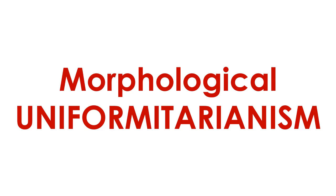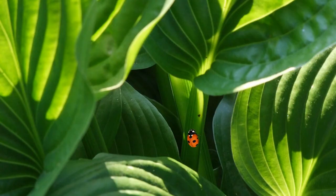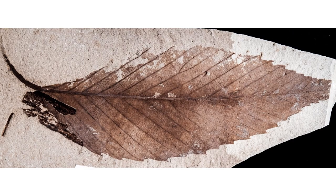A related concept is morphological uniformitarianism — the idea that the morphology of a fossilized organism can tell you about how and where it lived; it would have lived in an environment where you can find organisms with similar morphology today. As an example, leaves come in a variety of shapes and sizes related to the environments in which the plants live. Plants that live in warm climates tend to have leaves with entire rounded margins, while plants in cooler climates often have leaves with serrated, jagged, and toothed edges. So if you found a bunch of fossil leaves, you could probably determine what sort of environment and climate those ancient plants inhabited.